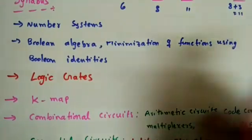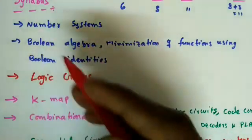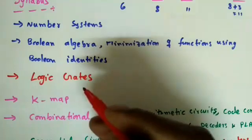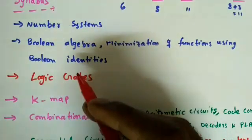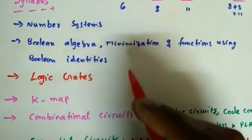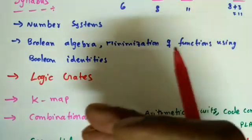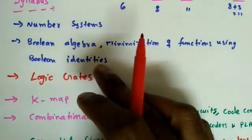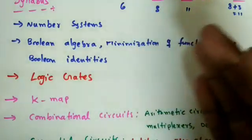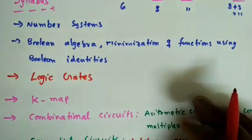The next topic is Boolean algebra — the theorems and identities used when designing digital electronic circuits to implement logic functions. This includes De Morgan's laws, distribution law, commutative law, associative law, and others. We'll also cover how to minimize larger functions to a smaller number of literals or variables using Boolean identities.